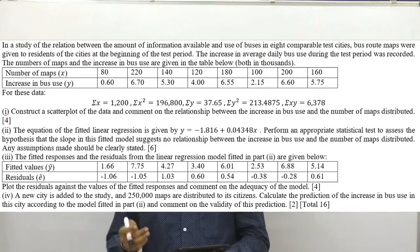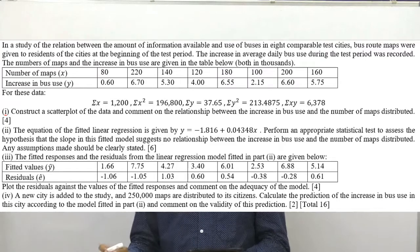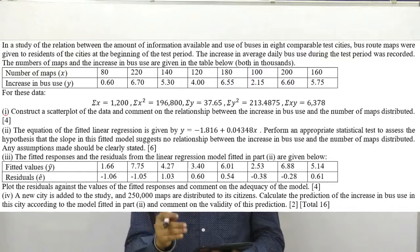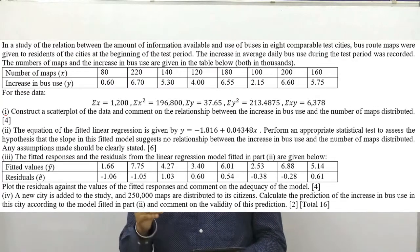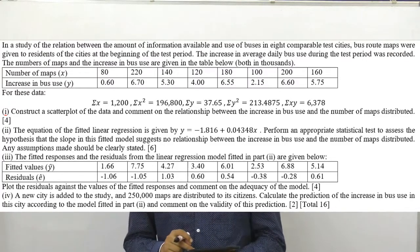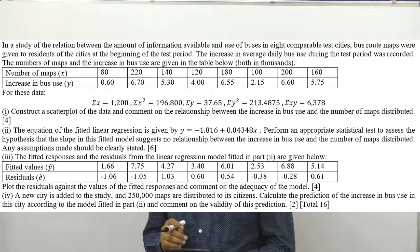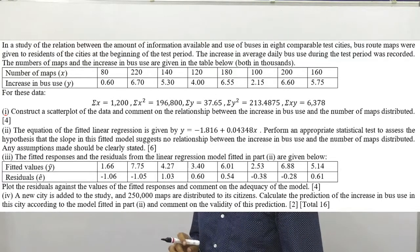How would you recognize whether this is a correlation or regression problem? We'll have two variables x and y, and the number of terms given will always be equal. You can see the number of x's and y's are equal, and one is causing the other. Here the question asks whether the number of maps distributed increases bus use or not, so this becomes a correlation regression problem. A scatter plot diagram is one way we can talk about the correlation between two terms.